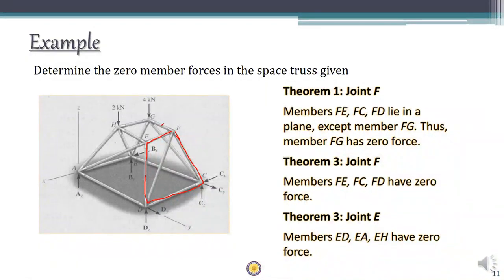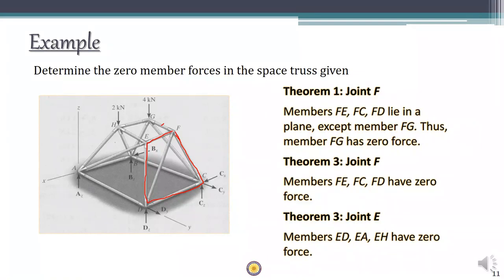Again at joint F, there is no external load acting. With GF already zero, the remaining members EF, DF, and CF do not lie in any common plane. According to Theorem 3, member forces EF, DF, and CF are also zero. For the same reason at joint E, there is no external loading acting, and hence all member forces meeting at E — that is EH, EA, and ED — are also zero force members. This concept has helped us remove many member forces from the problem, thereby simplifying it significantly.